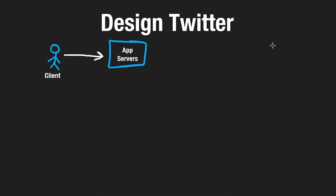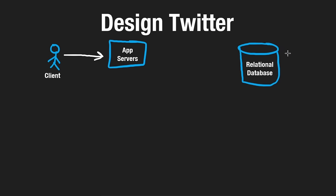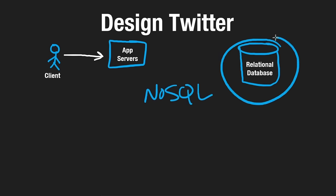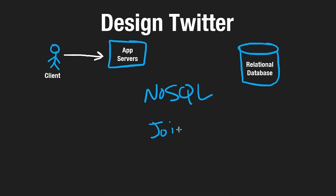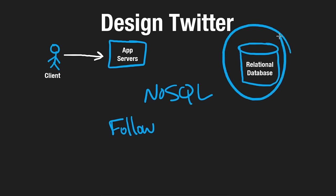Our application server is going to be reading from some storage. Let's say we use a relational database. You might think: if this is read-heavy, why use a relational database instead of NoSQL? Well, it depends on what data we're storing. We do need joins, because we have a very relational model when it comes to following — there's a clear relationship between followers and followees. So that's a reason to go with a relational database, and we can also implement sharding with it.